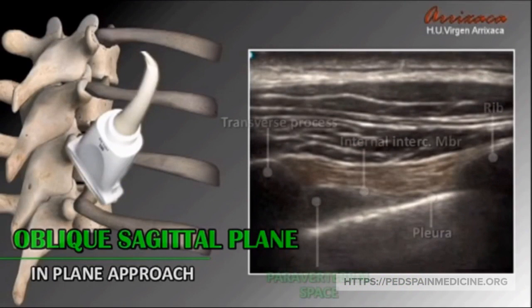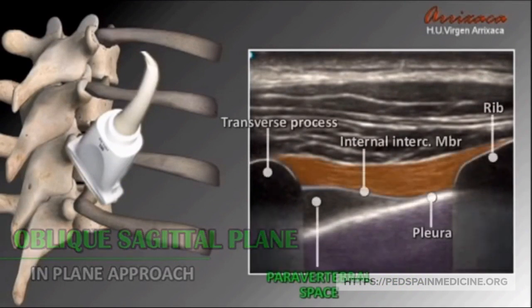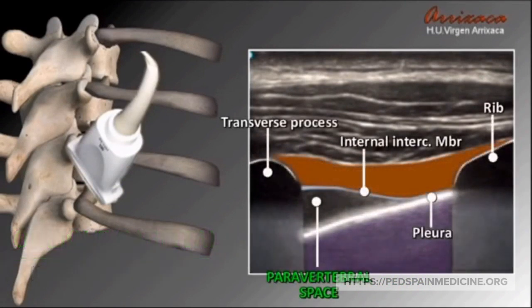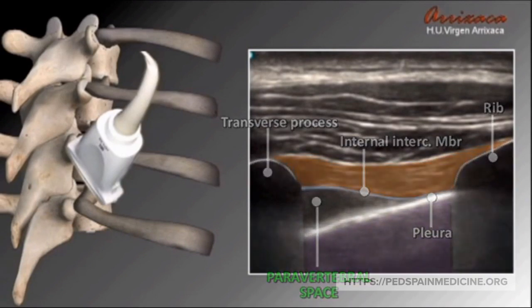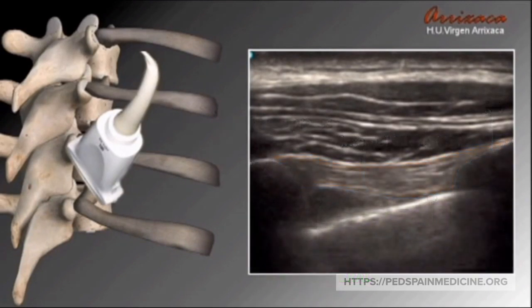This is the oblique sagittal plane approach. Rotate your linear probe, identify your transverse process and rib, and find an unobstructed pathway to the paravertebral space.